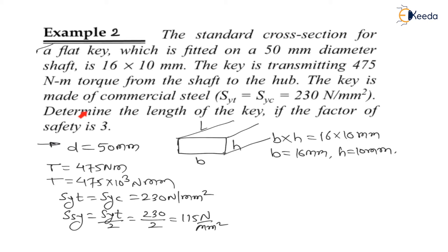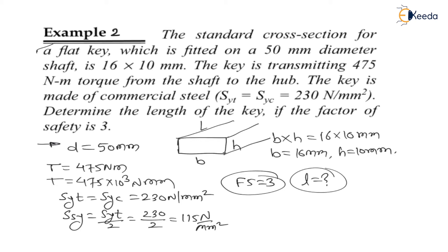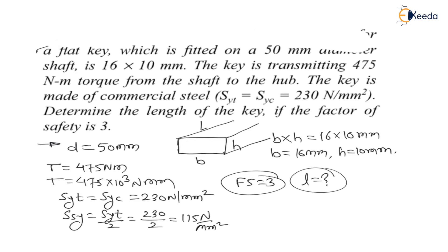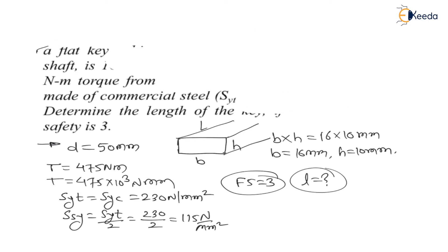We need to determine the length of key if the factor of safety is 3. As we have seen in the theory lecture, the key fails because of shear or because of crushing. We will find the length of key considering both shear failure and crushing failure. Let us go for the solution.